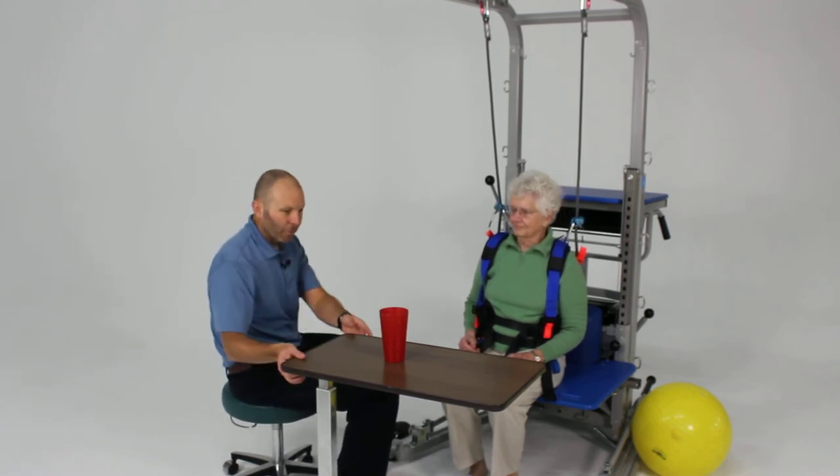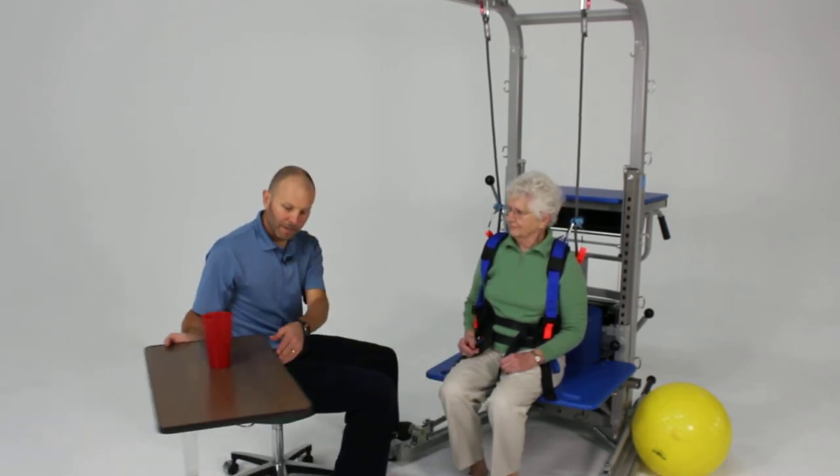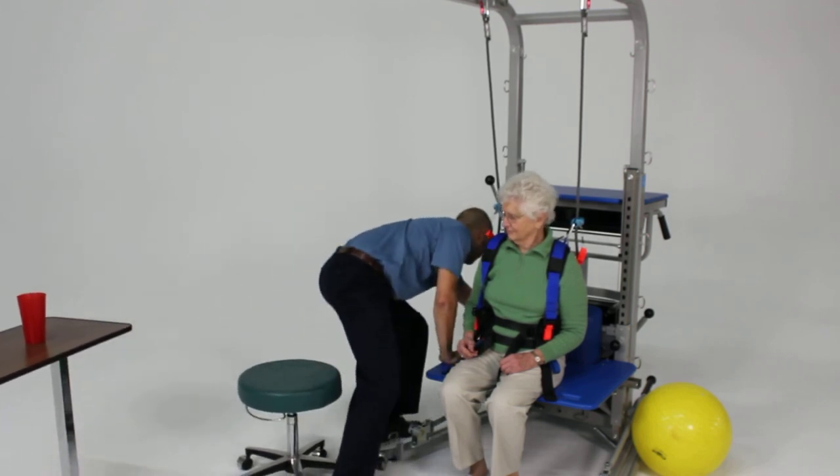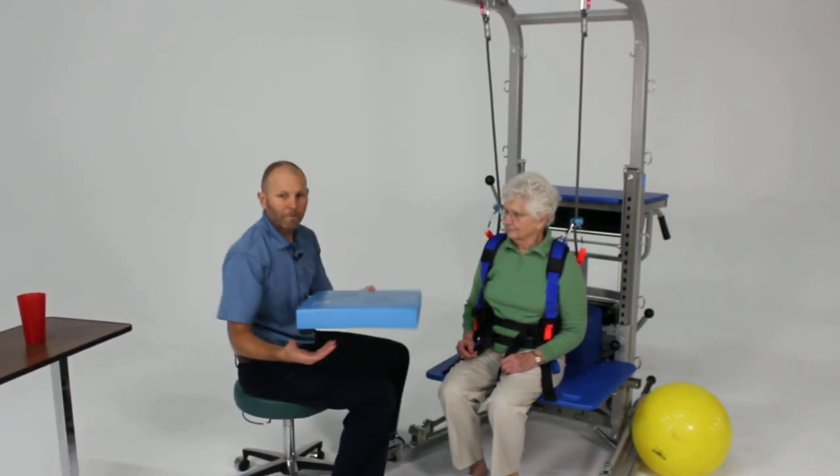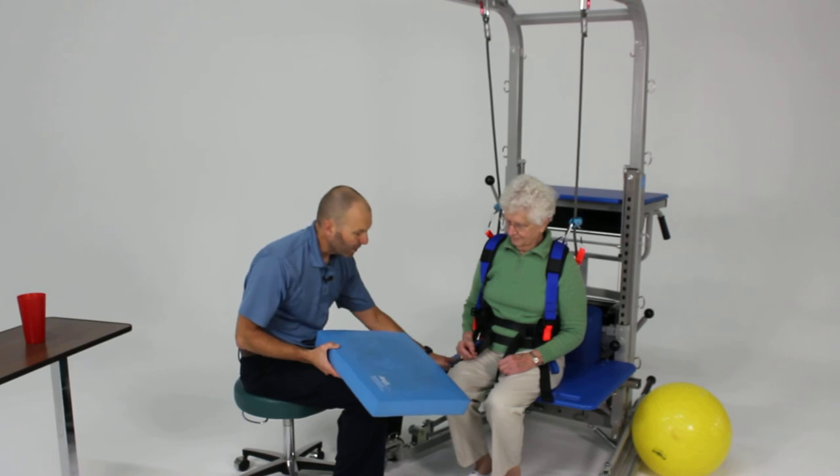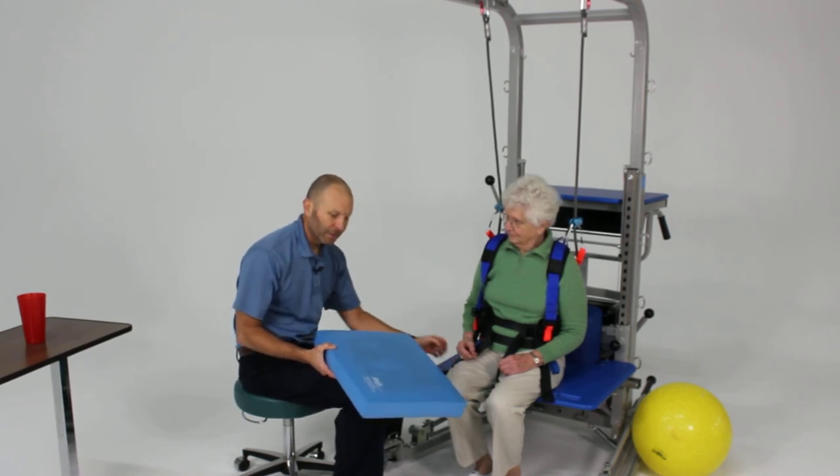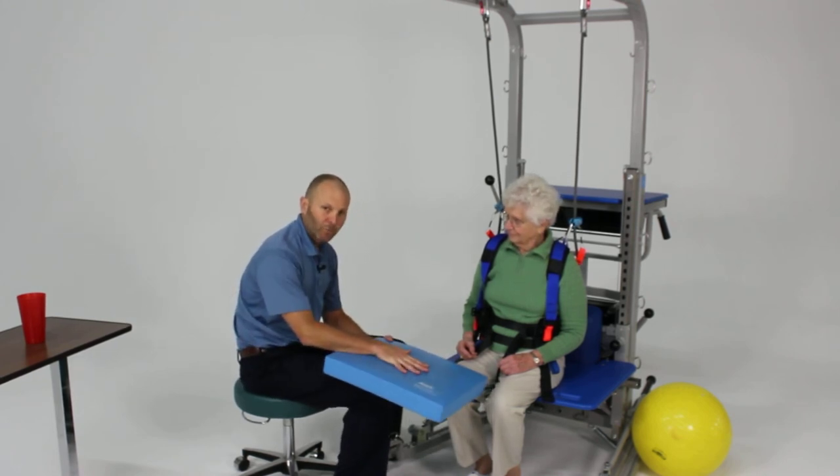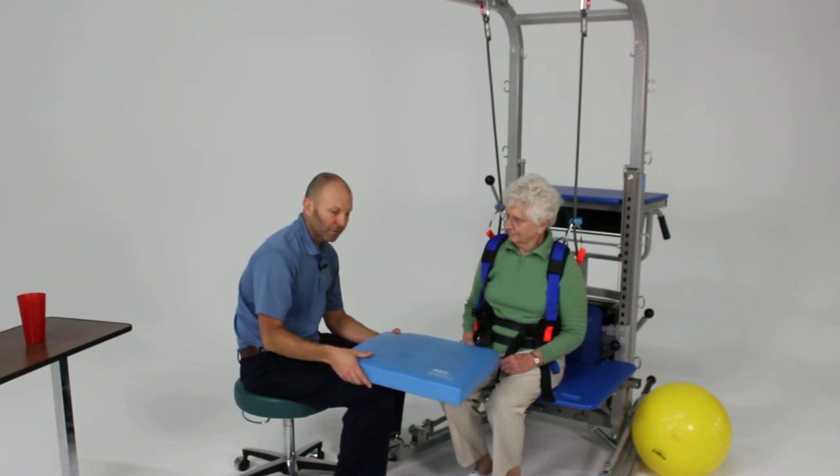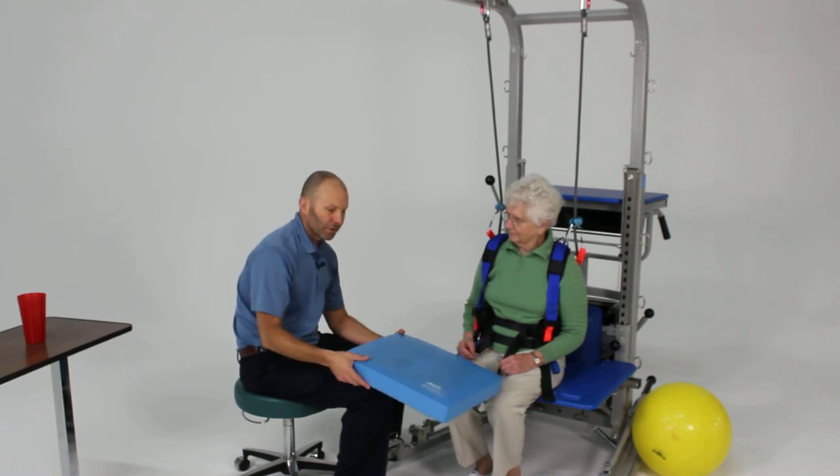Other things we can do for sitting balance on the bench is we can actually use some foam. We can place the foam underneath, between the bench and the patient, so they have a softer surface to sit on, which also provides some more postural challenge and control to achieve that.